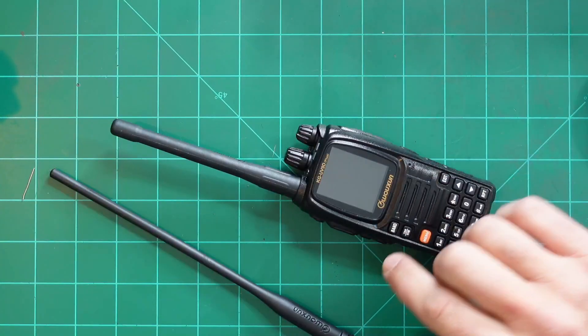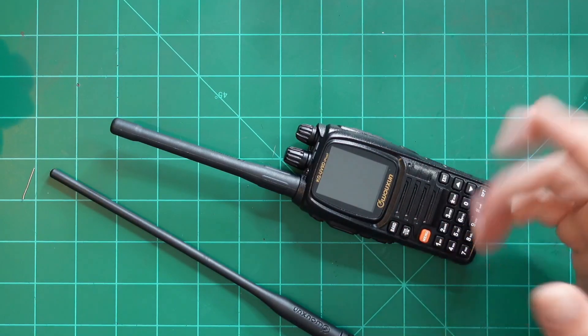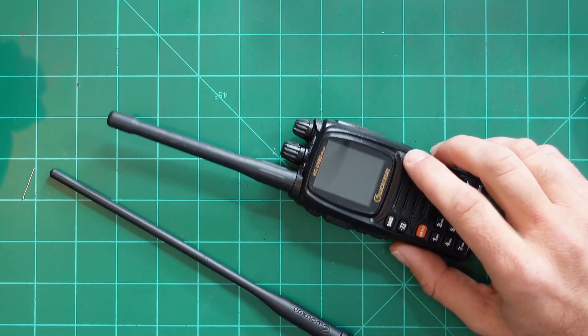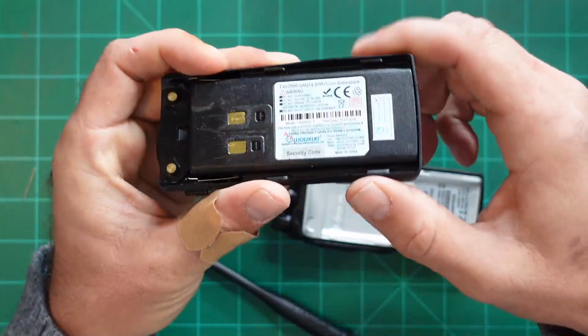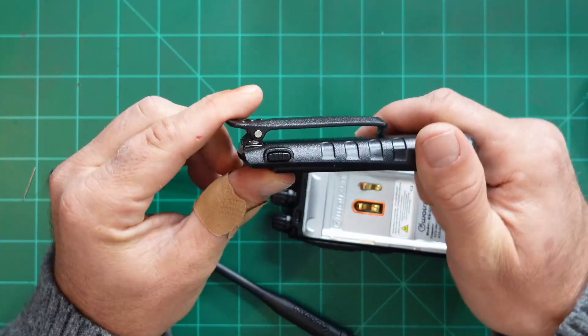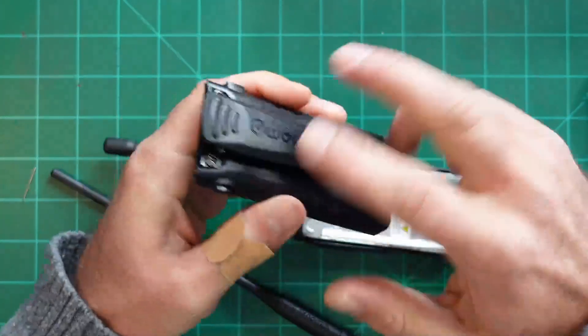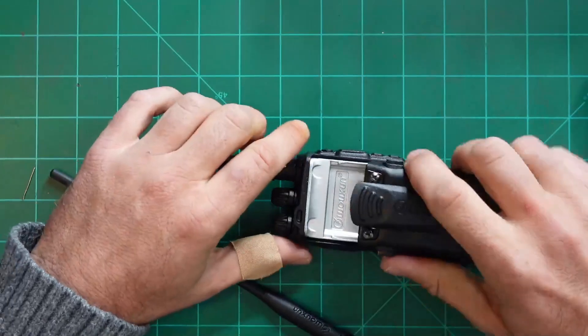Additional accessories that come with the radio include a user manual which is pretty detailed, and you also get a battery which is 2,000 milliamp hours or at least advertised as that. Additionally, you get a belt clip and I want to make note that the belt clip actually screws onto the battery as opposed to the radio itself.